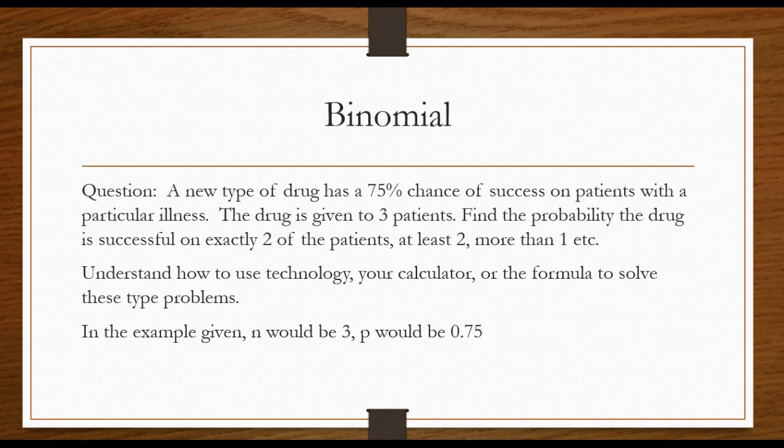At least two? More than one? In that problem they give you p which is 0.75 or 75%, they give you n equals 3, and then you should be able to get all of those probabilities very easily.